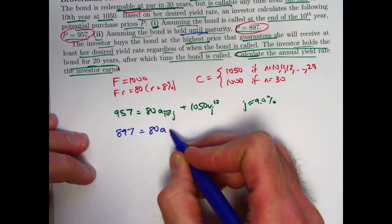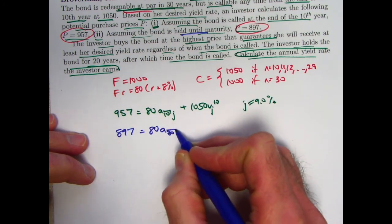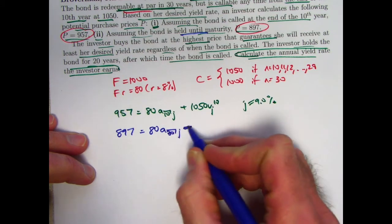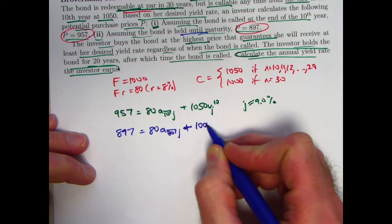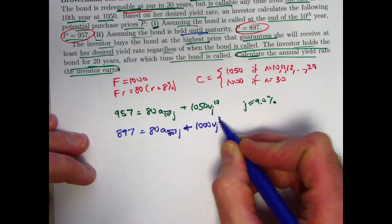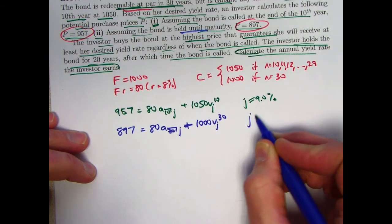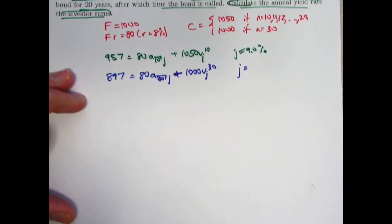Here we are assuming it's held until maturity, so N is 30. J is still unknown. Now the redemption amount is 1,000 instead of 1,050. Raise this to the 30th power. Use the financial functions to find J.